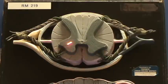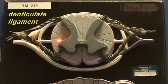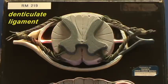An important structure illustrated in this model is shown right over here and right over here — the denticulate ligaments. Denticulate ligaments are extensions of the pia mater from the surface of the spinal cord onto the surface of the arachnoid and the dura mater.